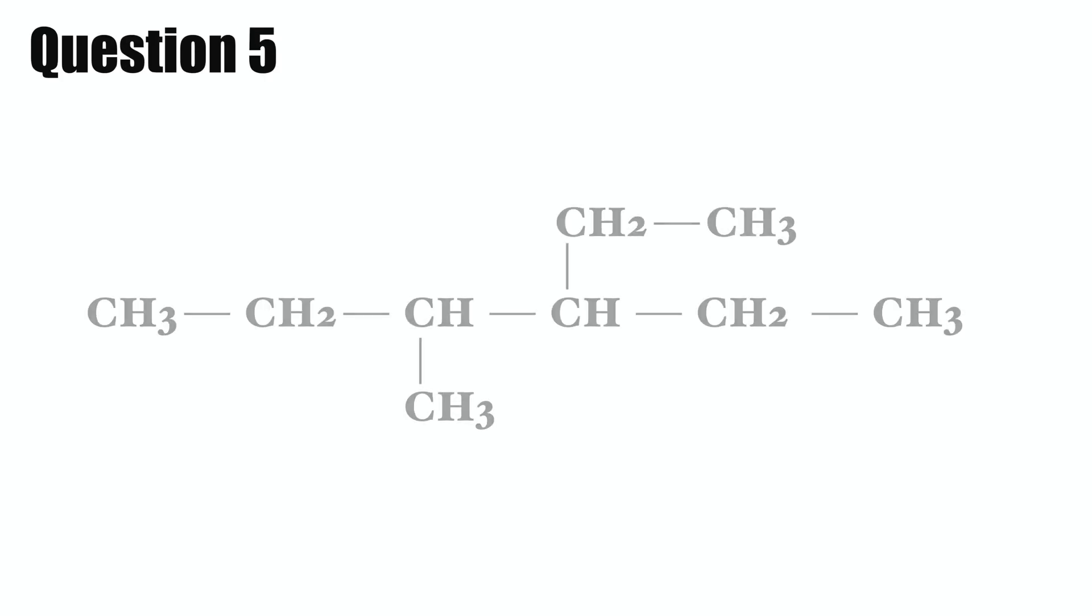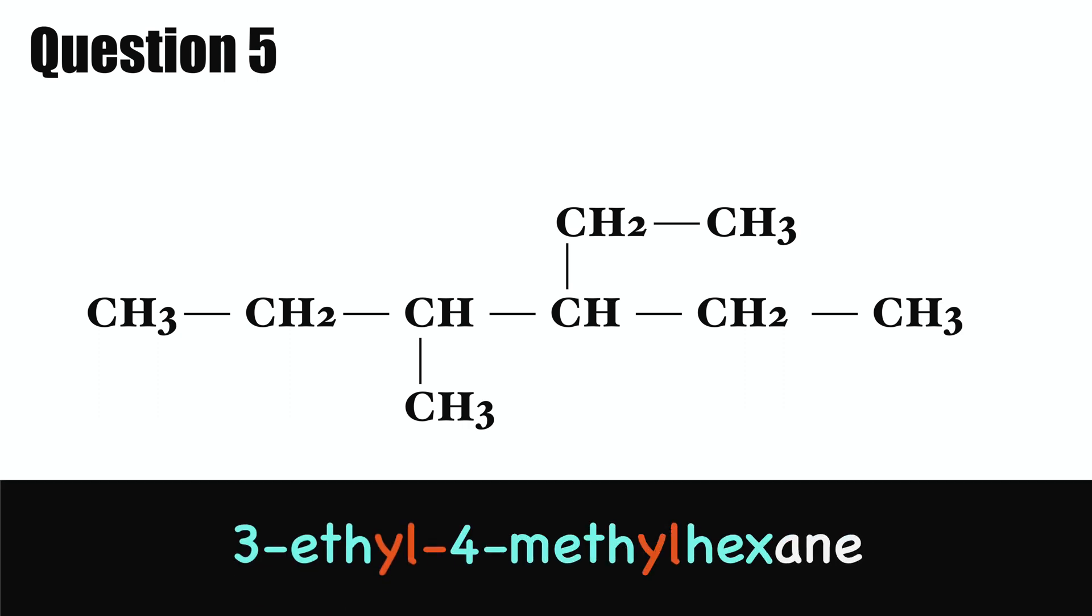Finally, question five. The parent chain has six carbons. There are one methyl substituent on carbon number four and one ethyl substituent on carbon number three. This compound is 3-ethyl-4-methylhexane.